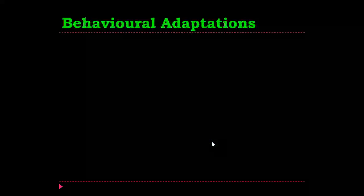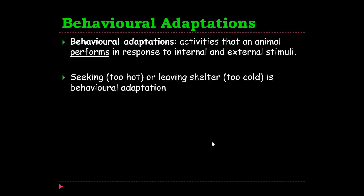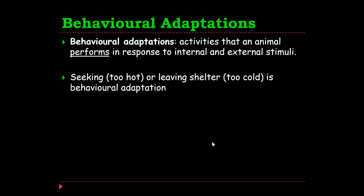Behavioural adaptations — the last type. Behavioural adaptations are activities that an animal performs in response to internal and external stimuli. Remember, stimuli is something in the environment — external stimuli is something in the environment which causes it to act in a particular way. Internal stimuli is a change from within — for example, overheating would be an internal stimulus it's reacting to. Some examples: seeking or leaving shelter — if it's hot, finding shade, physically walking over to it, and being in the shade in order to cool down. That is a behavioural adaptation.